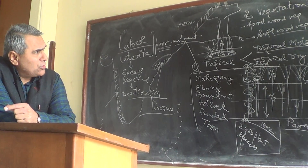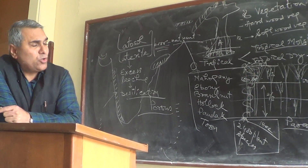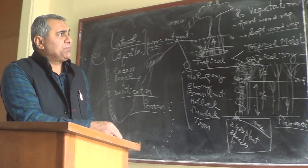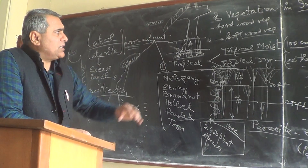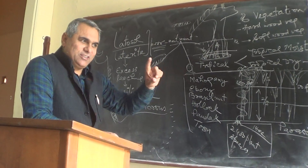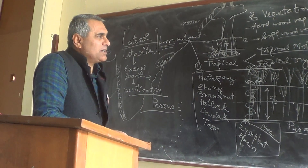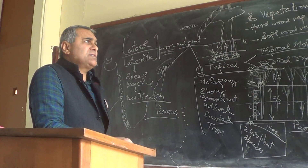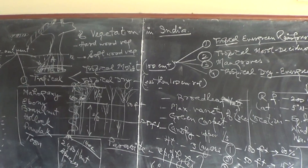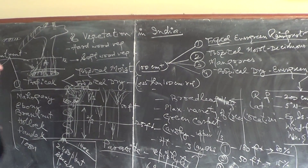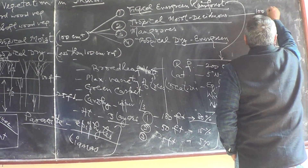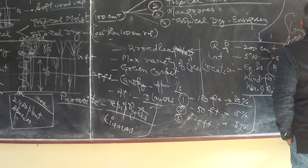Now moving to the next type: tropical moist deciduous forest. Tropical moist deciduous vegetation is the region with more than 100 centimeters of rainfall but less than 150 centimeters. This is the second type of forest — 100 to 150 centimeters of rainfall.